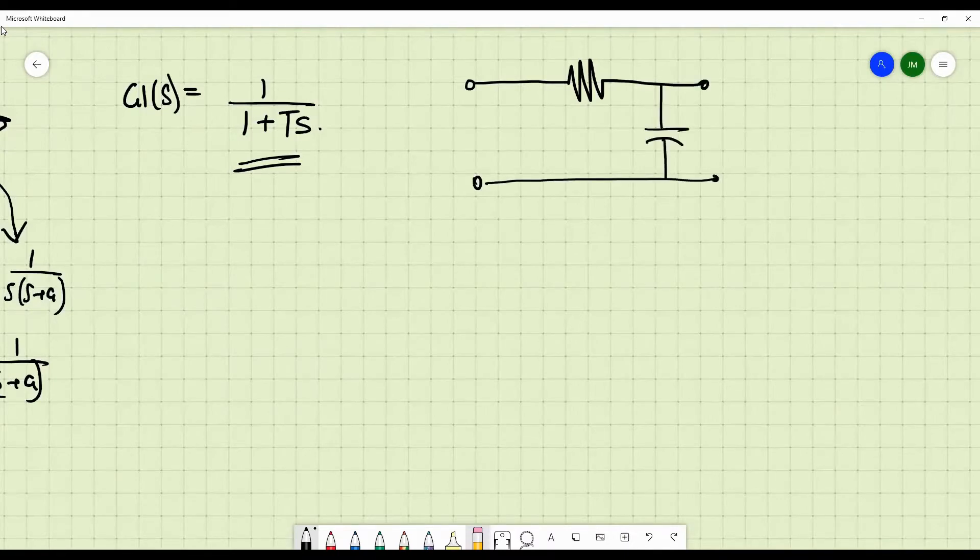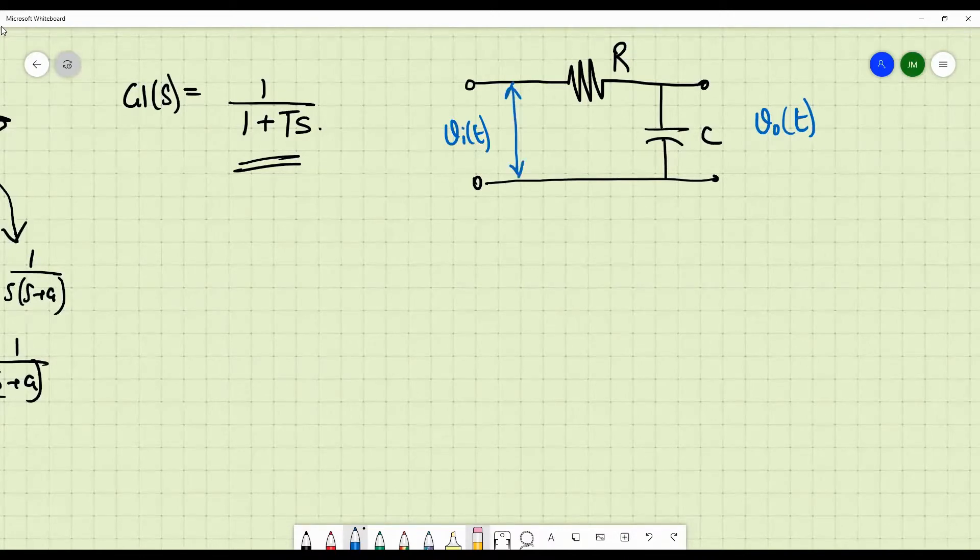This is R and this is C. What is the input and what is the output? The voltage across the capacitor is the output and the input is basically the voltage across both R and C. How do you get this type of a transfer function for this network? If you know, the capacitive impedance is always written as 1 by SC and resistance will remain as R.